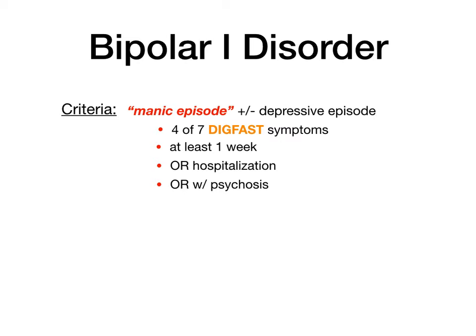Same thing with psychotic symptoms. Just memorize: four of seven DIG-FAST symptoms for at least one week is a manic episode, qualifying as bipolar 1. The plus-or-minus depressive episode is there because bipolar means two poles — shifting between mania (up) and depression (down). But it's the manic episode that seals the diagnosis for you.